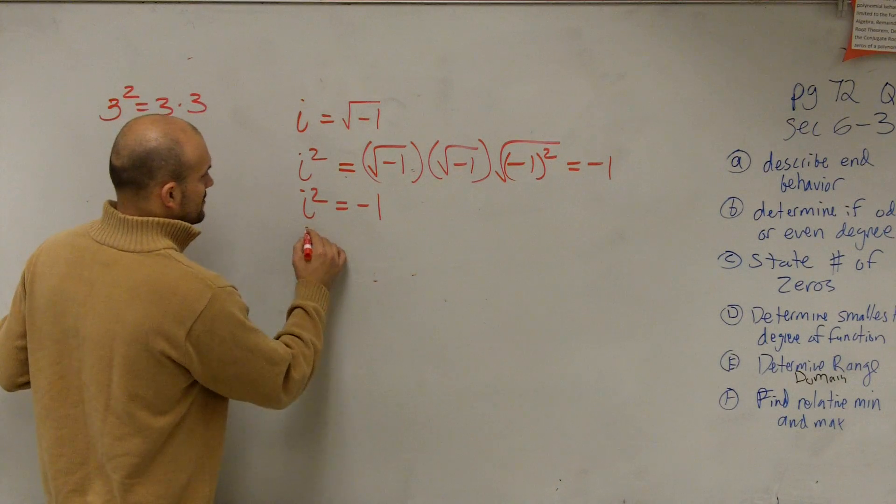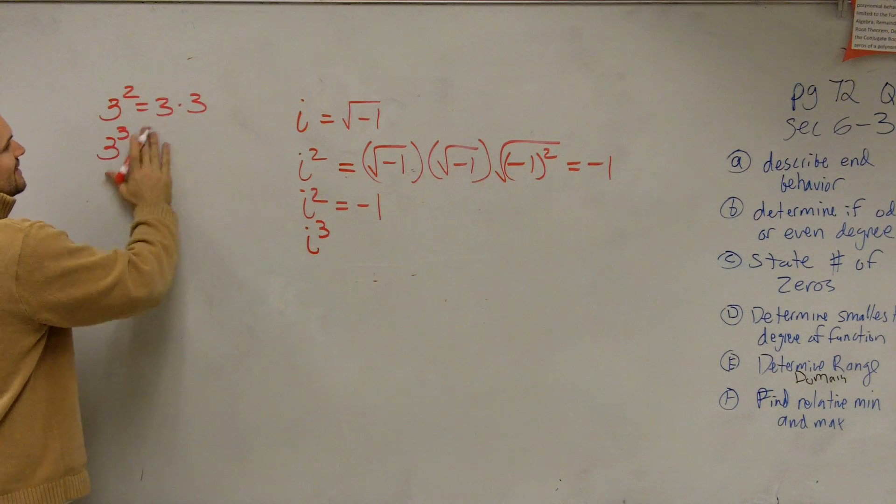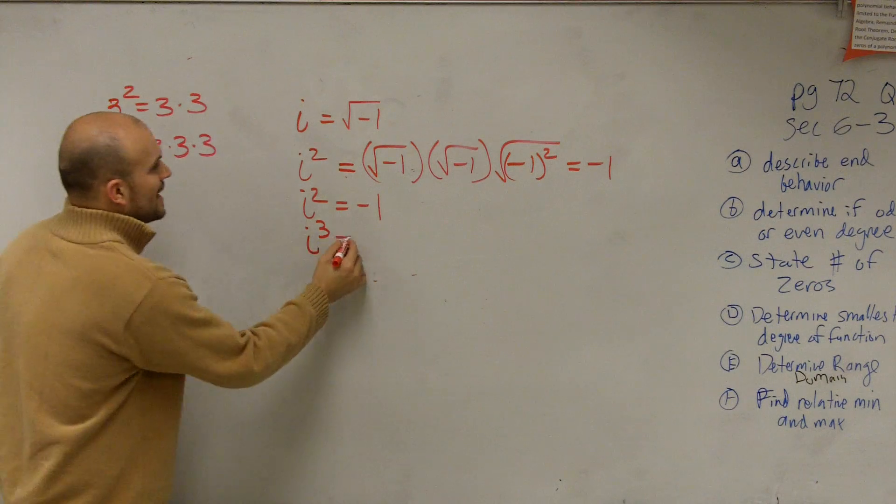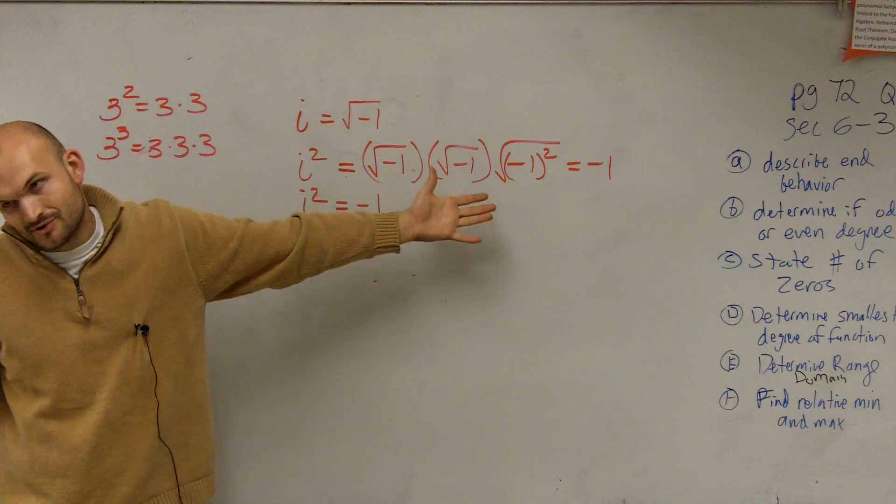Now let's do i cubed. 3 cubed means 3 times 3 times 3, right? Well, ladies and gentlemen, I could do the square root of negative 1 squared three times, right?